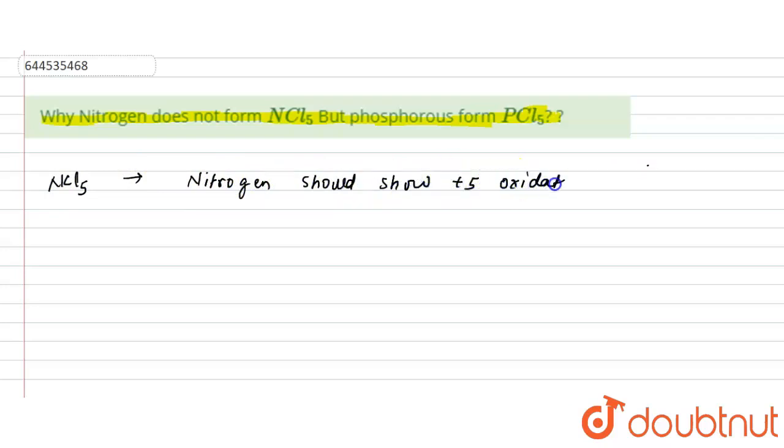Now let's see whether it is possible or not. We all know that nitrogen has atomic number equal to 7. If you want to write its electronic configuration, how will you write it? 1s² 2s² 2p³.